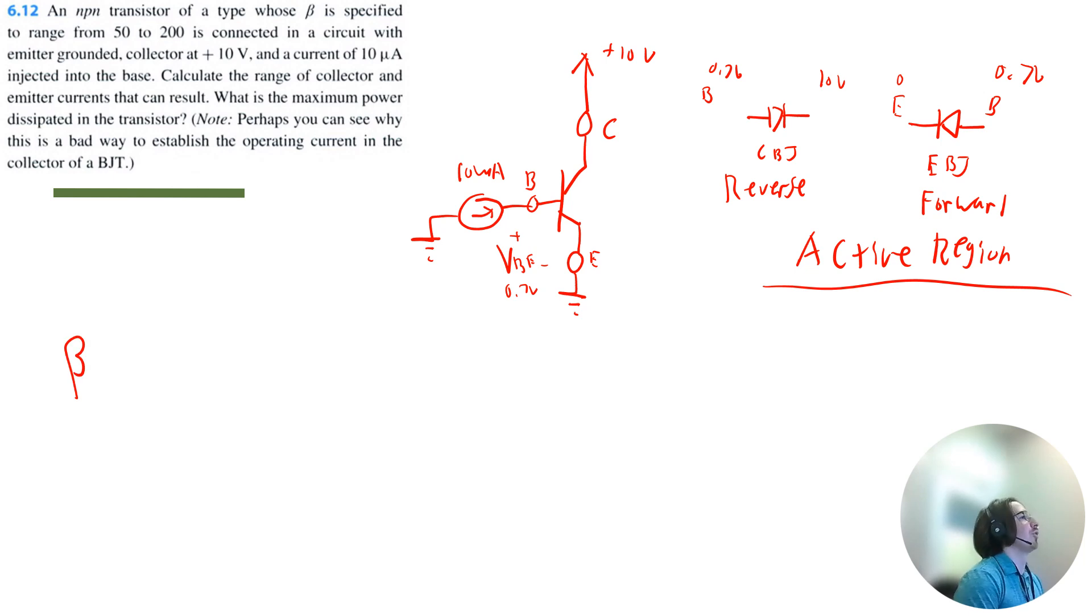Now we're going to solve for currents. Beta is going to range from 50 to 200, and we know that the base current is 10 microamps. So using that information we can solve for the collector current equal to beta times the base current.